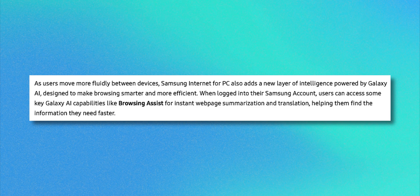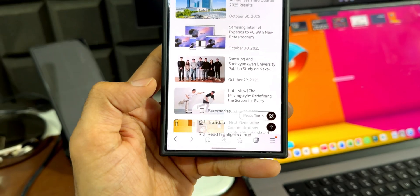Samsung also says Samsung Internet for PC adds a new layer of intelligence powered by Galaxy AI, designed to make browsing smarter and more efficient. When logged into their Samsung account, users can access key Galaxy AI capabilities like browsing assist for instant web page summarization and translation, helping them find information faster.